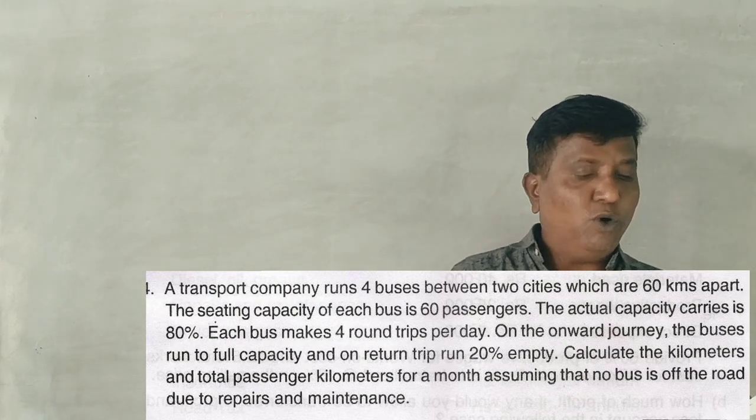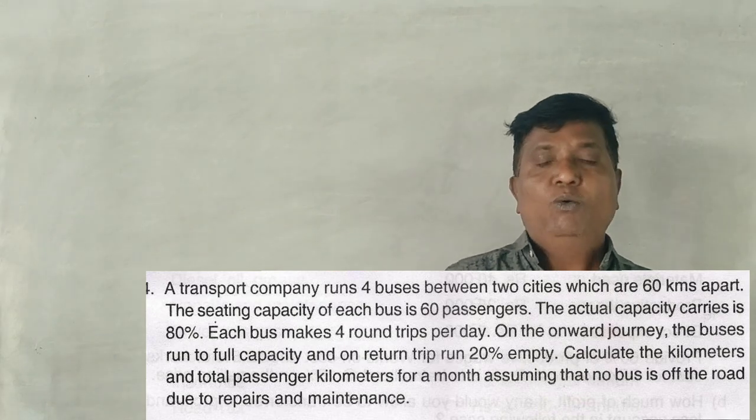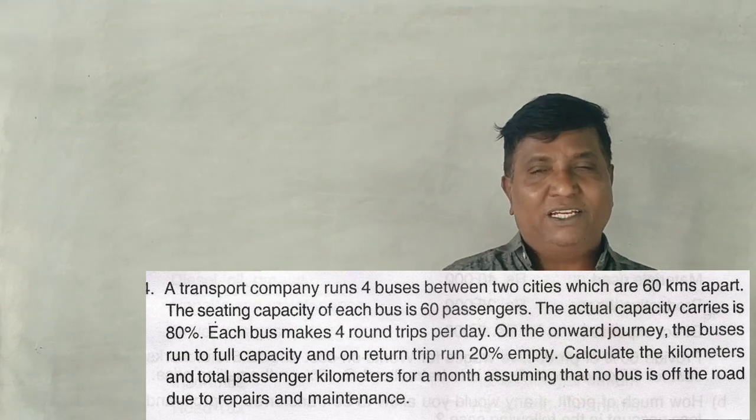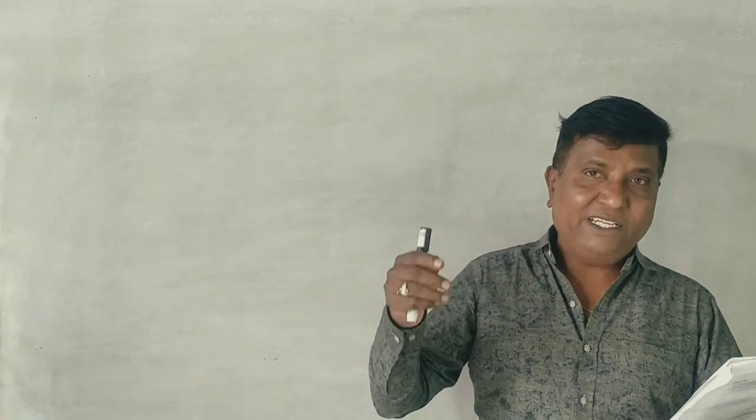Each bus makes four round trips per day. On the onward journey, the bus runs to full capacity. If you go to 60 passengers, it will be full, 48 passengers.